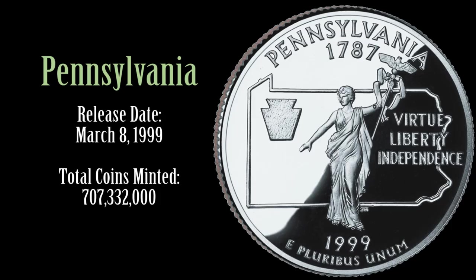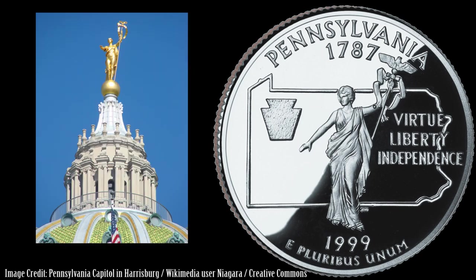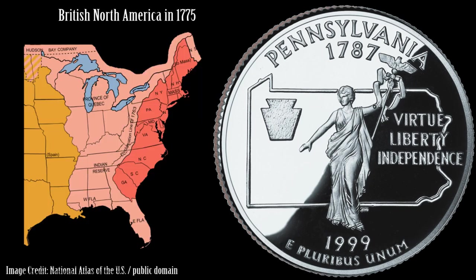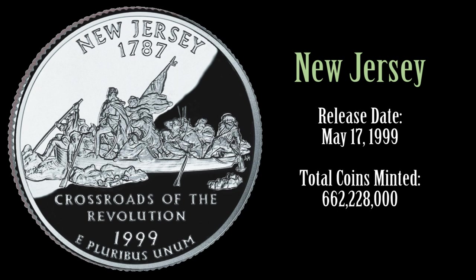Pennsylvania's Quarter features a Commonwealth statue with an outline of the state behind her. The state's motto of Virtue, Liberty, and Independence, adopted in 1778, appears to the right, while a keystone appears to the left. The Commonwealth statue is a gilded statue created in 1905 that stands atop the dome of the Pennsylvania State Capitol Building in Harrisburg. The keystone is a reference to the state's nickname, the Keystone State. The keystone is a wedge-shaped stone piece at the apex of a masonry vault or arch that allows the arch to bear weight. Pennsylvania was associated with this name as the state was at the center of the original 13 colonies that declared independence and home to the nation's first capital of Philadelphia.